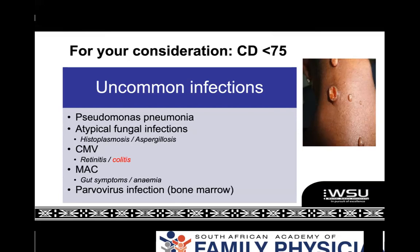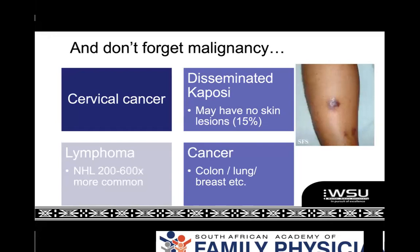You don't need to know all of these — you just need to realize when you don't know what's going on and ask an ID specialist. In any patient losing weight, think about cancer. HIV patients are more likely to get certain cancers — cervical cancer, disseminated Kaposi's (remembering 15% might have no skin lesions, presenting only with weight loss and diarrhea), non-Hodgkin's lymphoma, and more common cancers like lung, colon, and breast. Your differential diagnosis package is quite large, even in a very young patient.